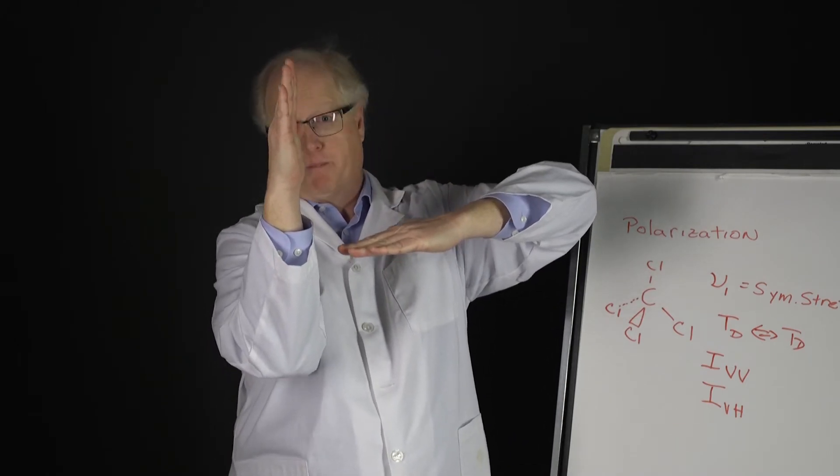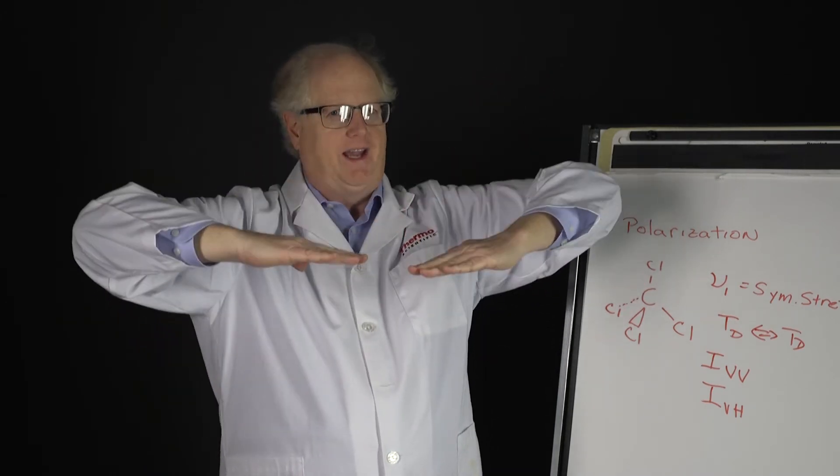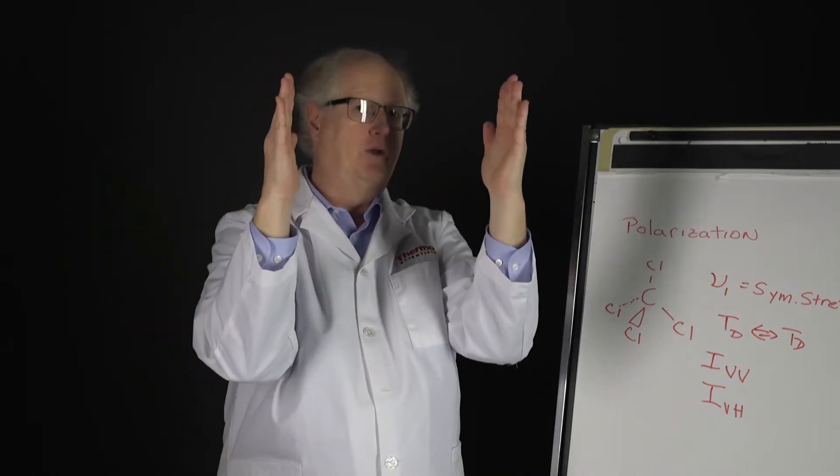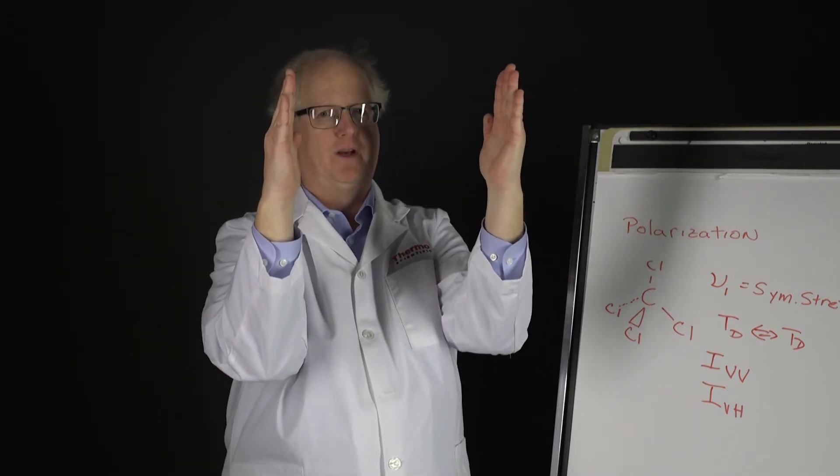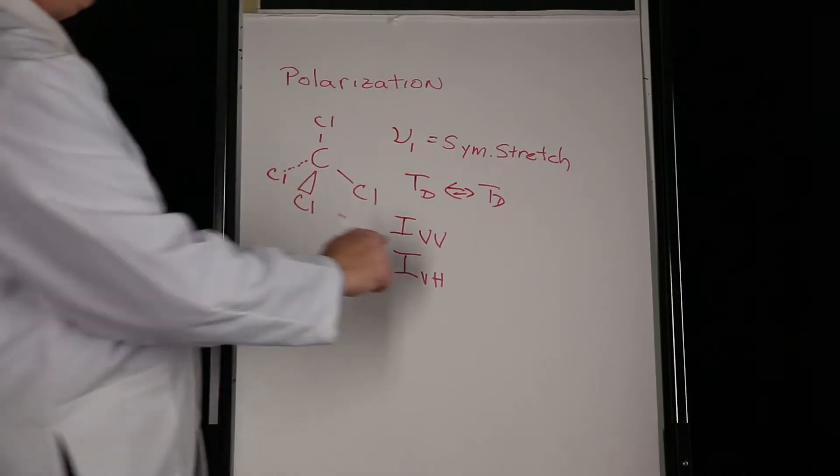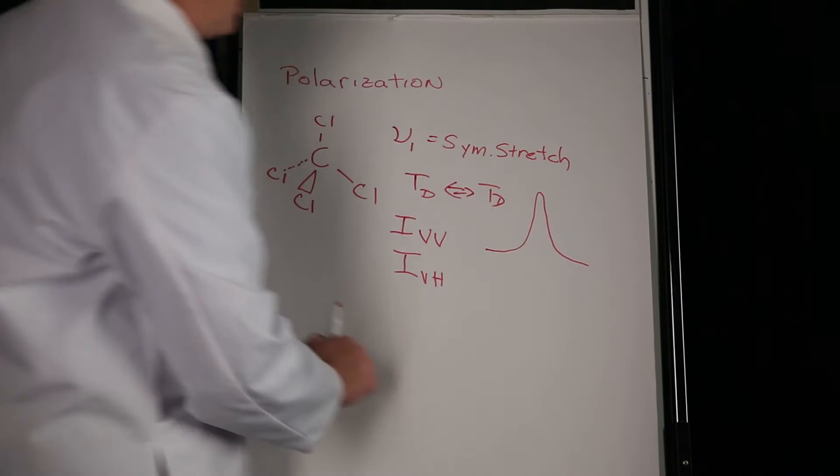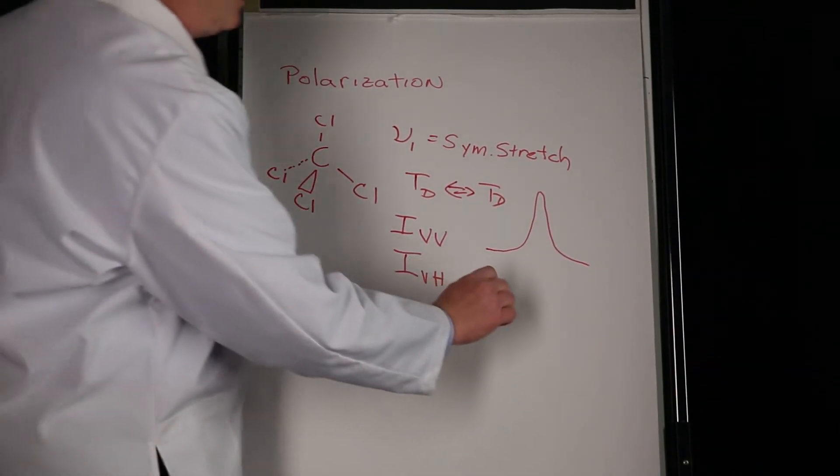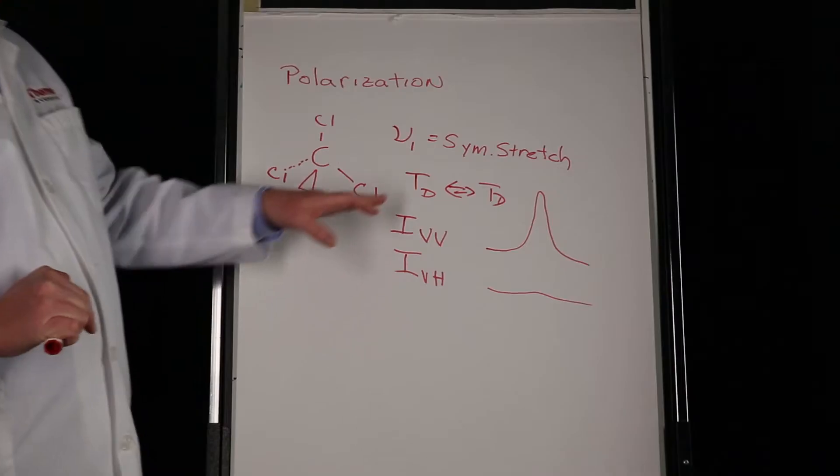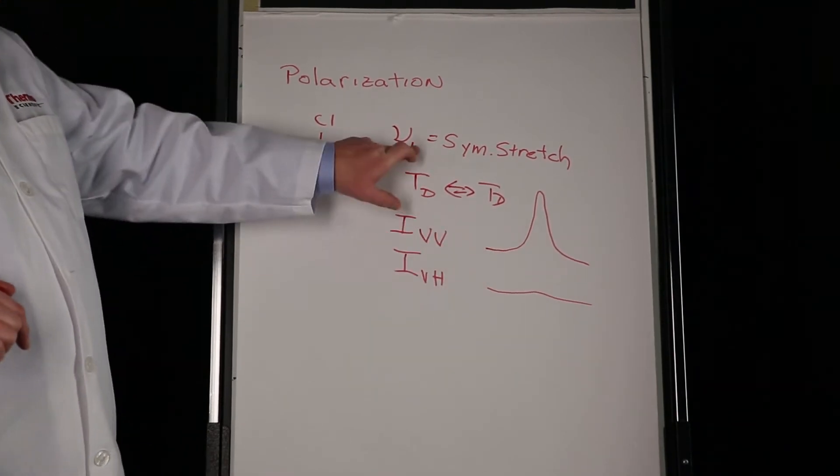VH is when I rotate my detector polarization perpendicular. Now obviously there's four combinations, right? VV, HH, HV, but the two that I'm really going to be concentrating on are VV and VH. In the case of VV, if I look at the ν1 I get a large peak. If I look at the VH I see almost nothing, and that's the key. The polarization of the Raman scatter is sensitive to this symmetry of the molecule.